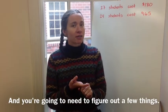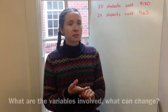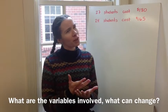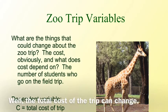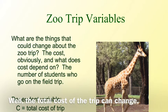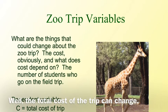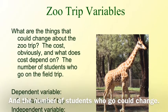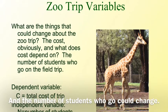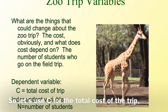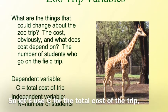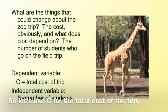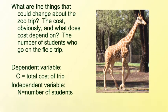You are going to need to figure out a few things. What are the variables involved? What can change? Well, the total cost of the trip can change, and the number of students who go could change. So let's use C for the total cost of the trip, and N for the number of kids who go to the zoo.